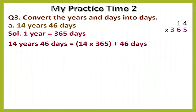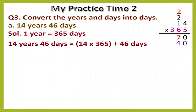First we multiply 5 by 14: 5 fours are 20, write 0 and carry 2; 5 ones are 5 plus 2 will be 7. Now put one 0, then multiply 6 by 14: 6 fours are 24, write 4 and carry 2; 6 ones are 6 plus 2 will be 8.